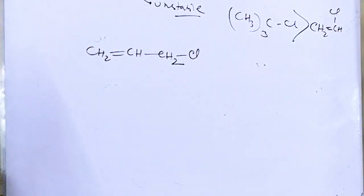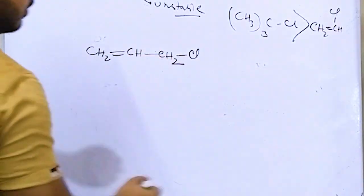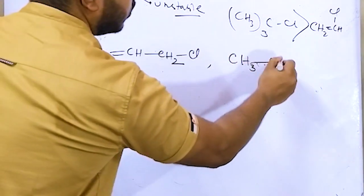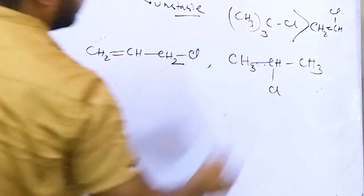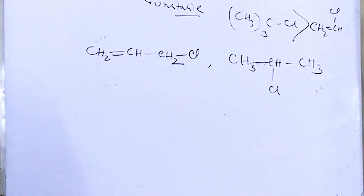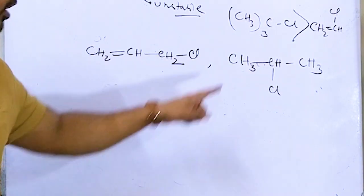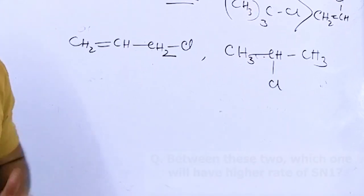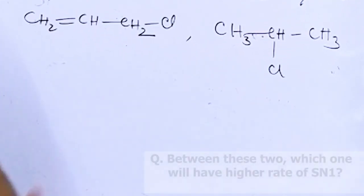Next question: between 2-chloropropane and 3-chloropropene (allyl chloride) and 2-chloropropane — which one is going to give SN1 at a faster rate?